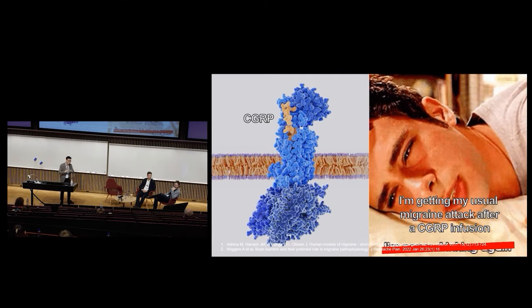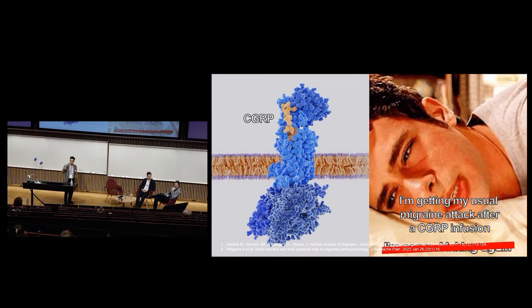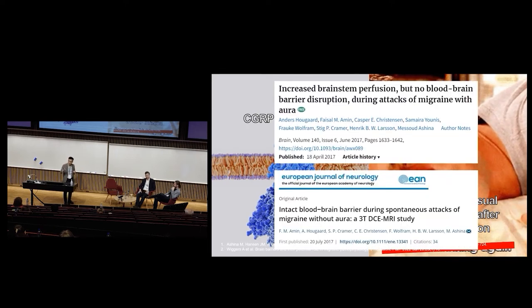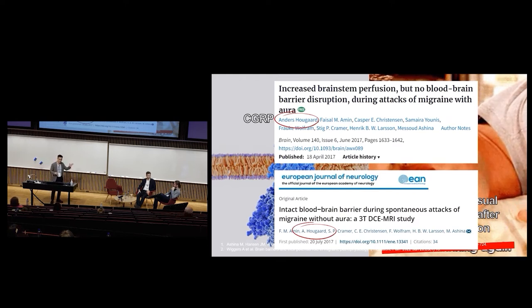A counter-argument is that some have speculated the blood-brain barrier might have a little dysfunction — be leaky or have increased permeability for these molecules in migraine patients. But my colleague Dr. Hauge demonstrated with colleagues from the Danish Headache Center that the blood-brain barrier is intact during migraine attacks. So this argument does not hold. We can provoke attacks through purely peripheral mechanisms.